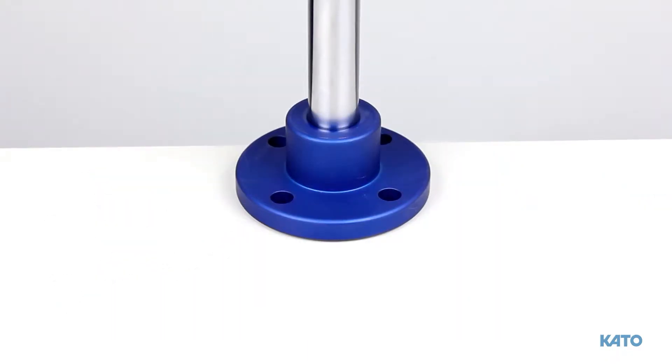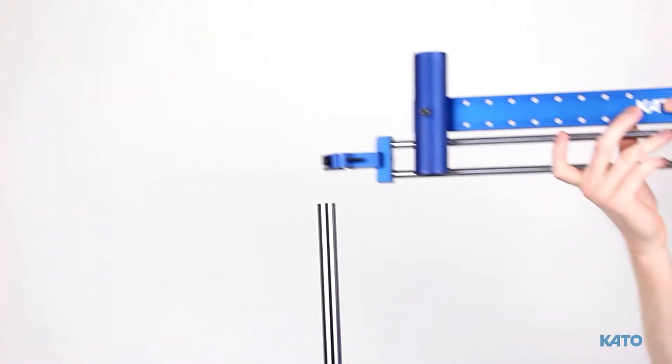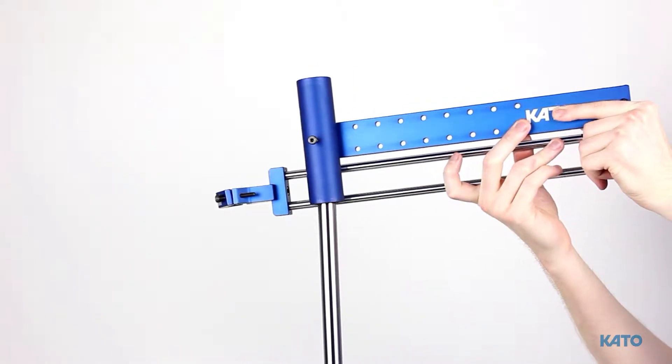For this demo purpose, I have Z-clamped the vertical post to a flat surface. Once the vertical post is stable, let's put the articulating arm on the vertical post.